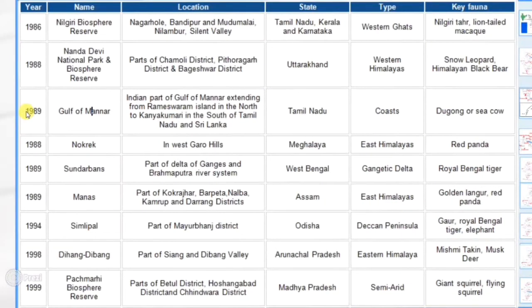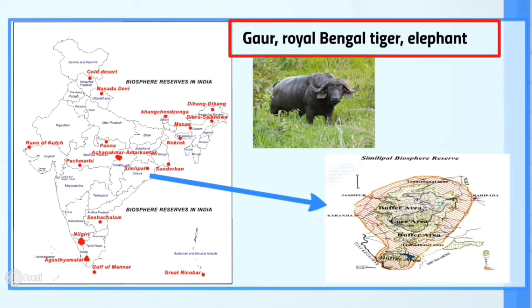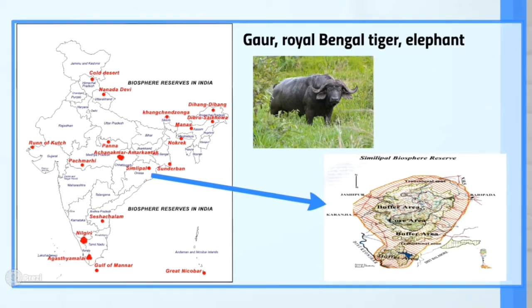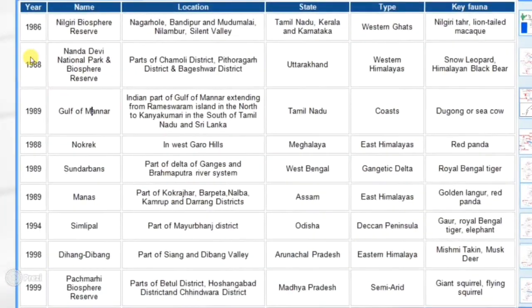Moving ahead, the next biosphere is Simlipal, located in Odisha. The main key fauna here is the Gaur, which looks like a buffalo. Next are Royal Bengal Tiger and Elephant.